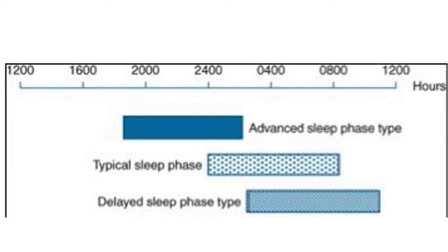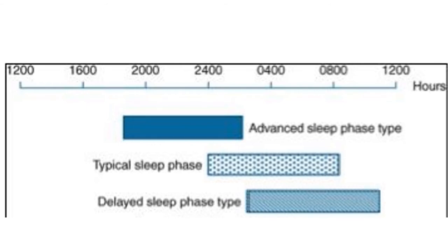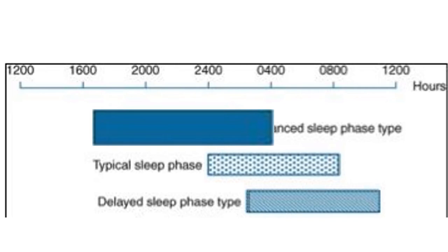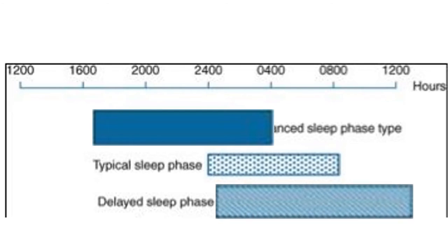Here is the typical sleep phase pattern. In advanced sleep phase type, our internal clock is set earlier — we go to bed earlier and wake up early in the morning. In delayed sleep phase type, there is delayed onset of sleep and we wake late in the early morning.